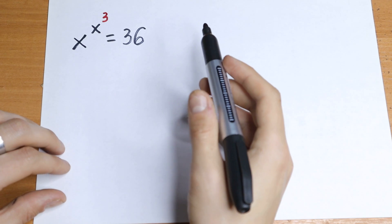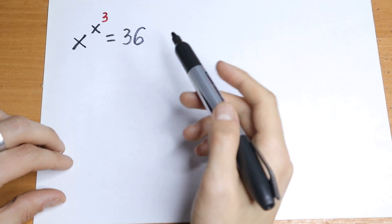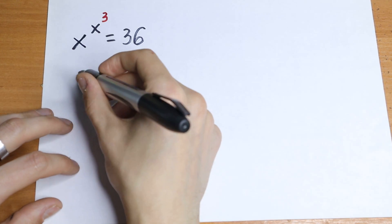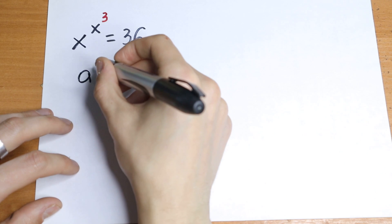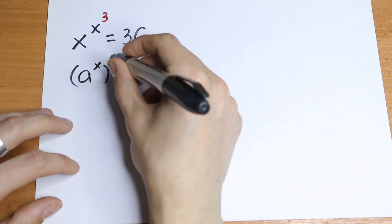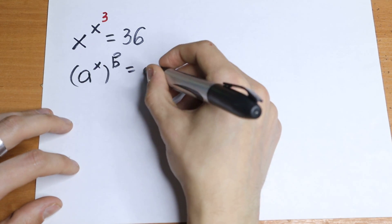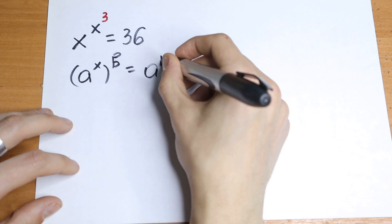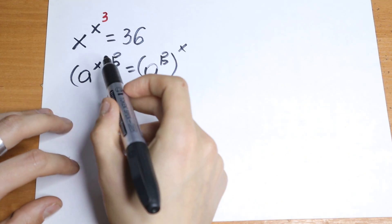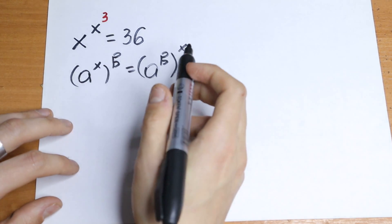And let's try to solve this. For sure we need to know about the rule of interchange. If we have a to the power x raised to the power b, it will be equal to a to the power b raised to the power x. So we can swap this power, this exponent.